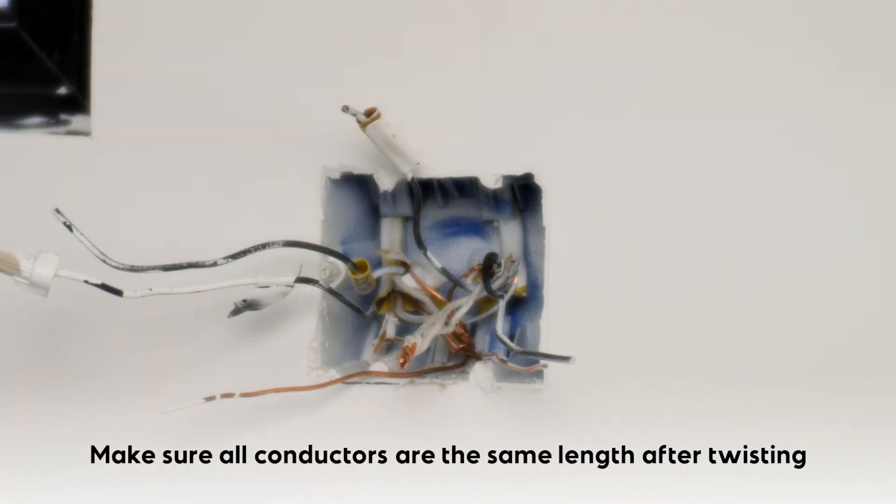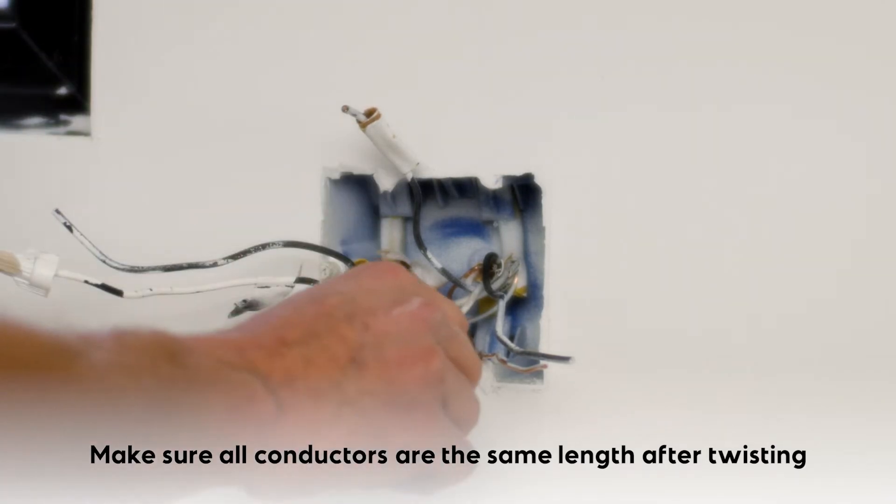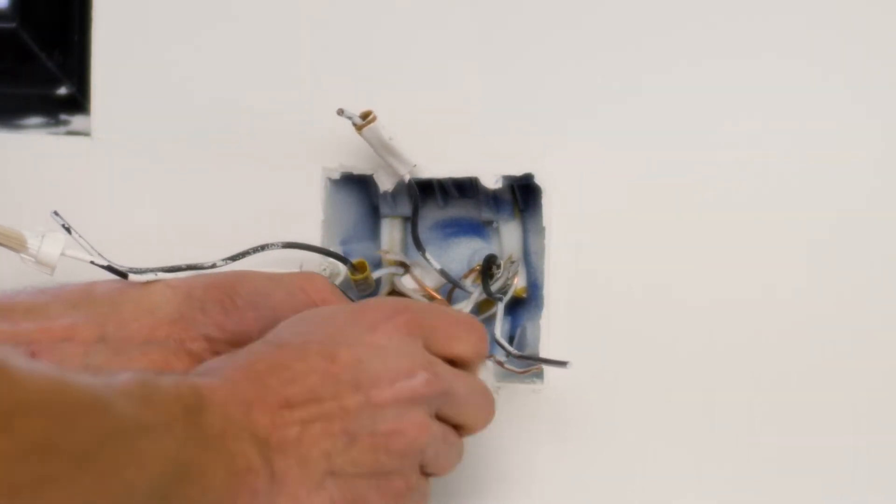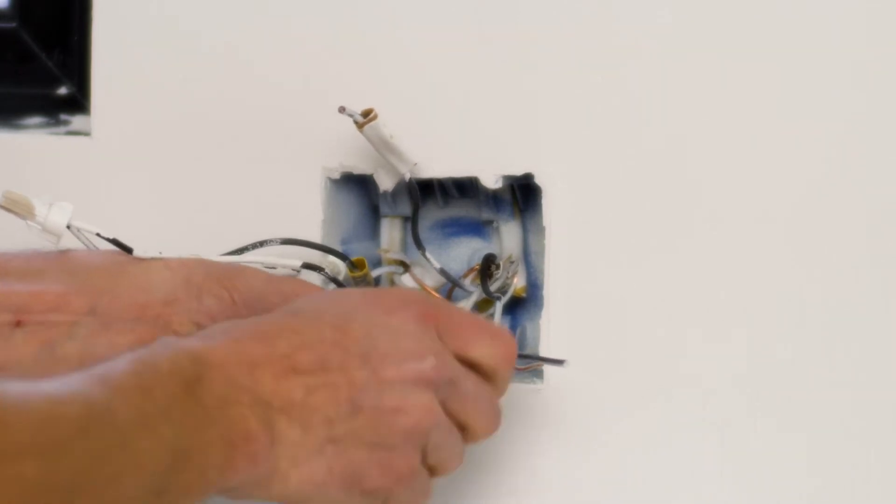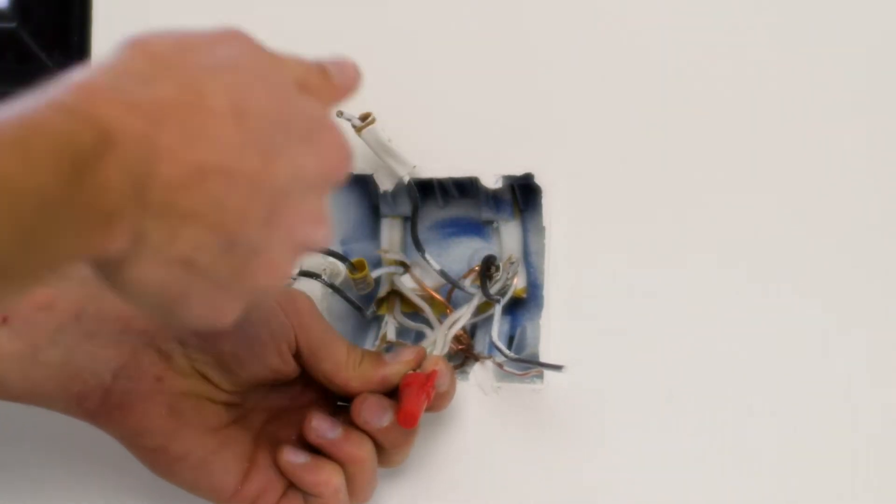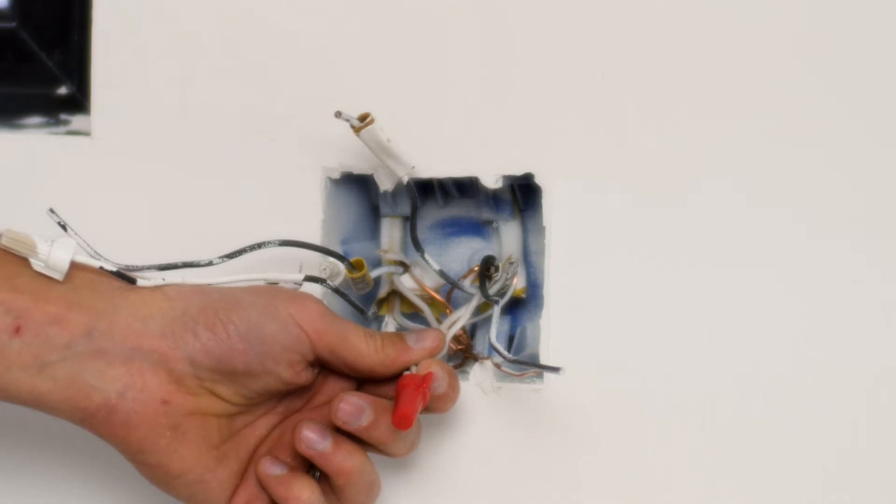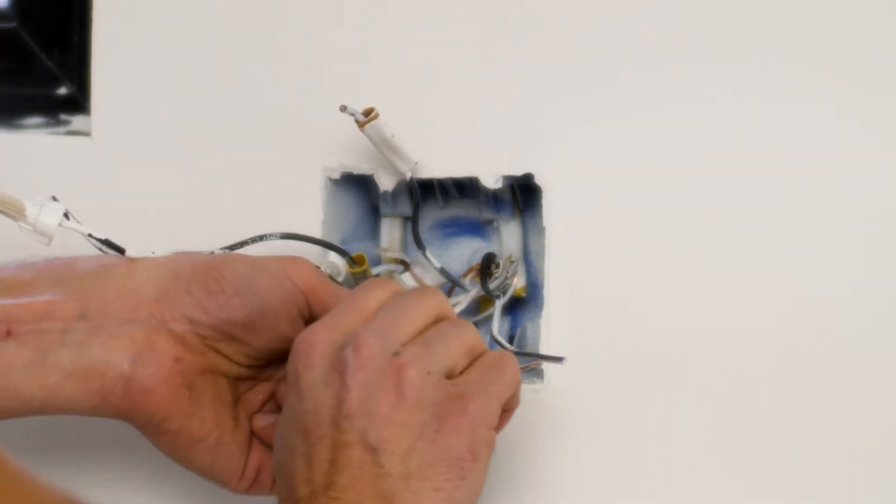In this case, because I have four number 12s, I'm using a red ideal wire nut. I'm twisting to the right. Always to the right. Your pre-twist is always to the right because your wire nut installs to the right. That's the tightening method.